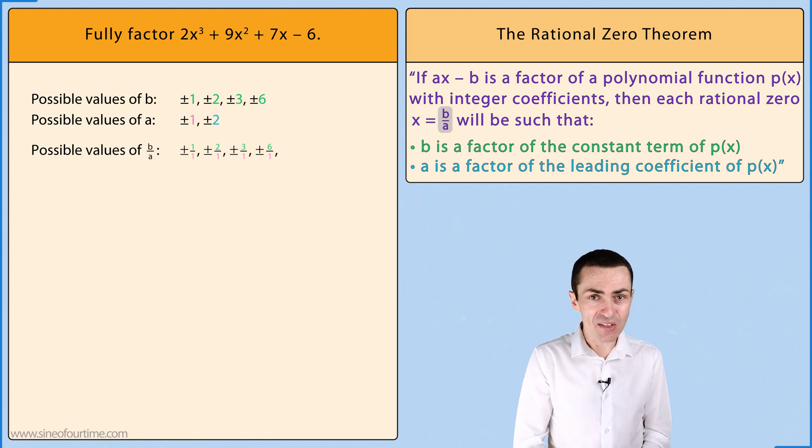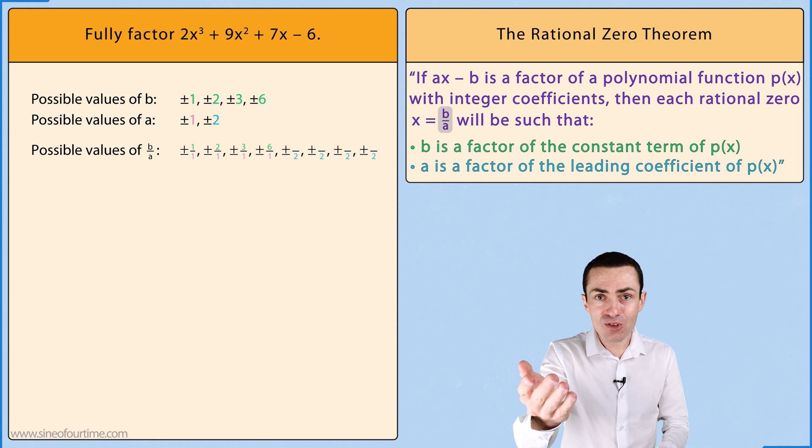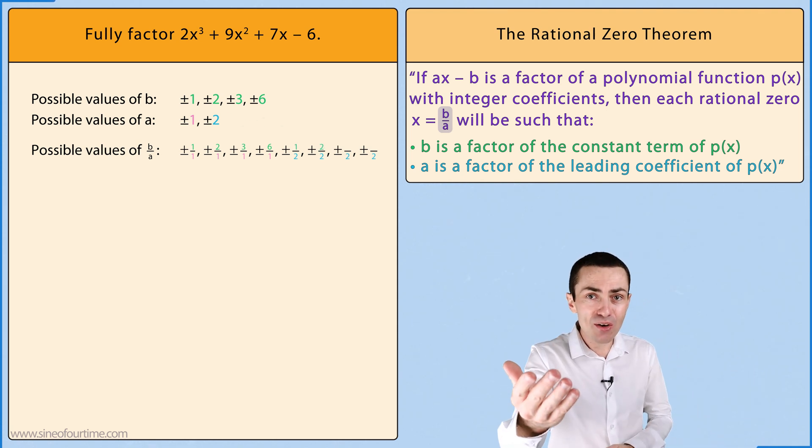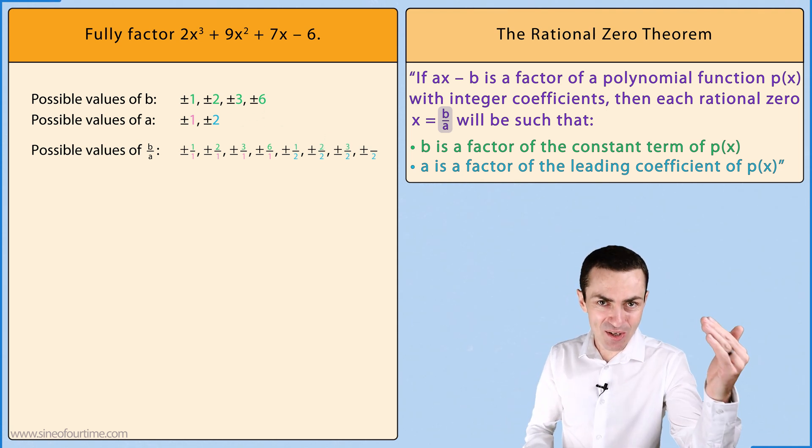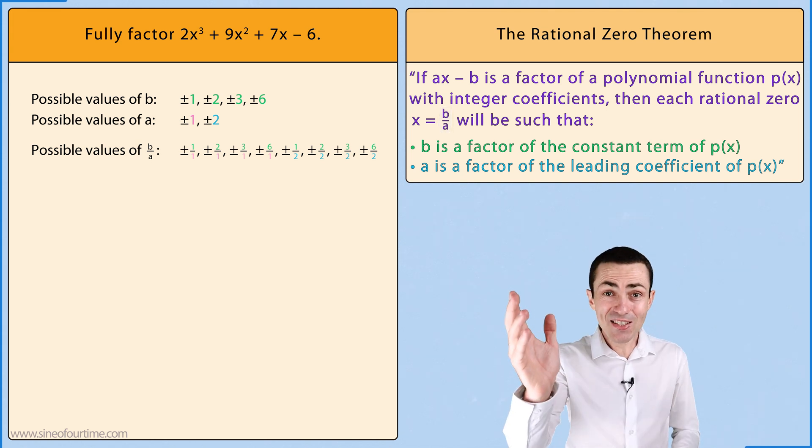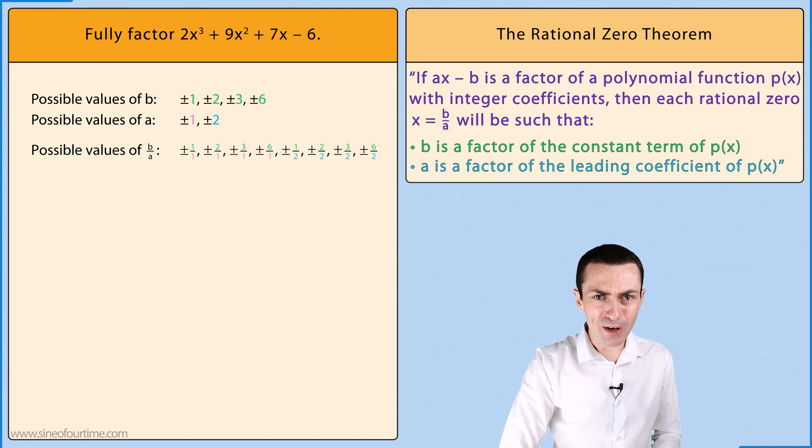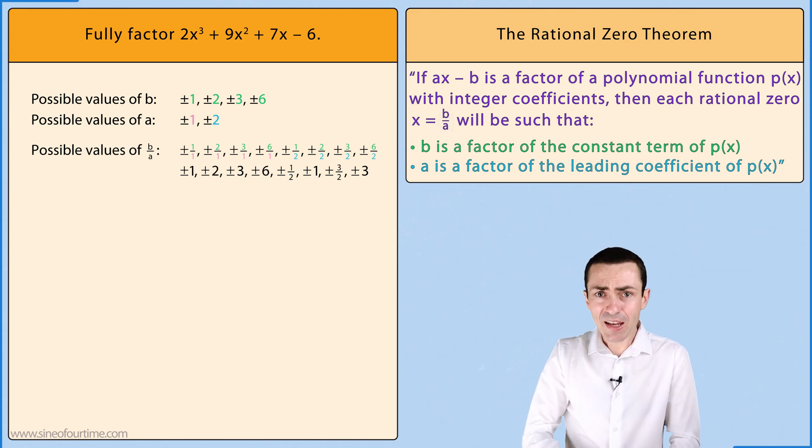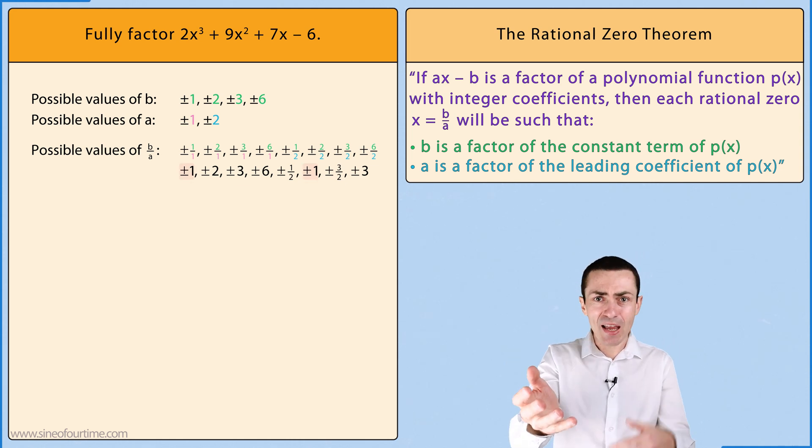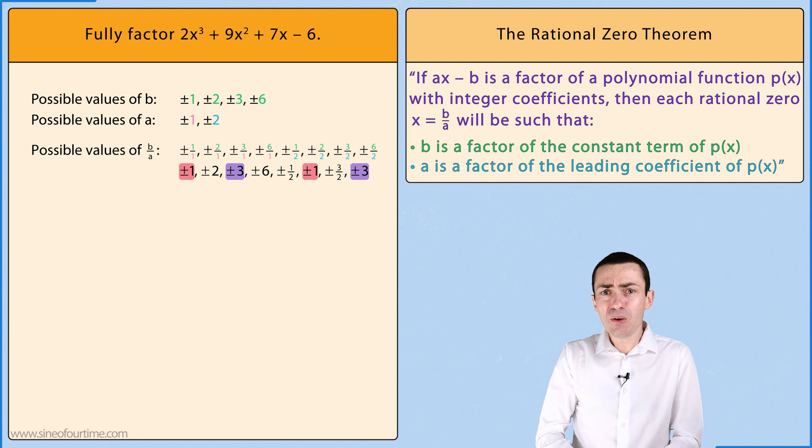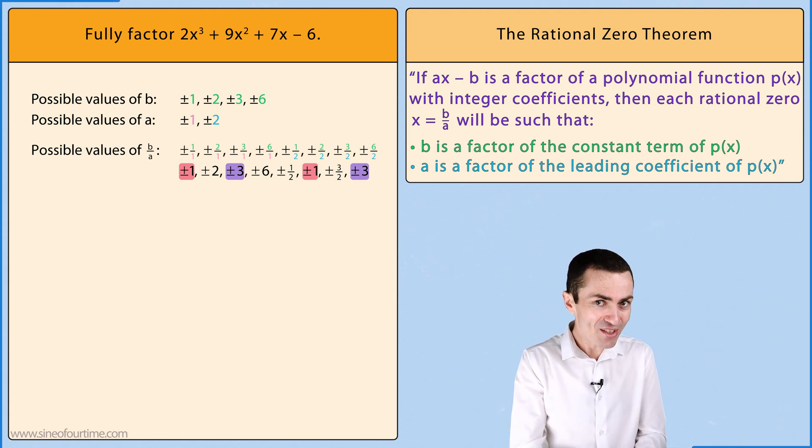Now let's move on to a = 2 where the possible values of b/a are 1/2, 2/2, 3/2 and finally 6/2. At this stage let's just simplify these fractions where possible. And notice that we do get some repeated values such as plus or minus 1 and plus or minus 3. Now we don't want to test these values twice so we make sure that we only include them once in our final set of values of b/a to test.